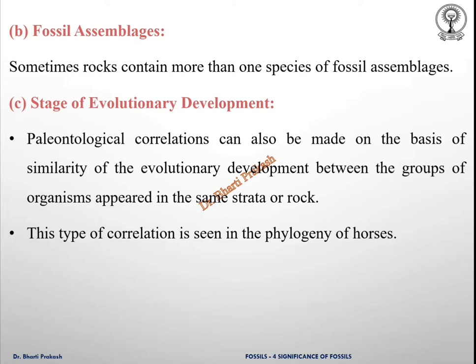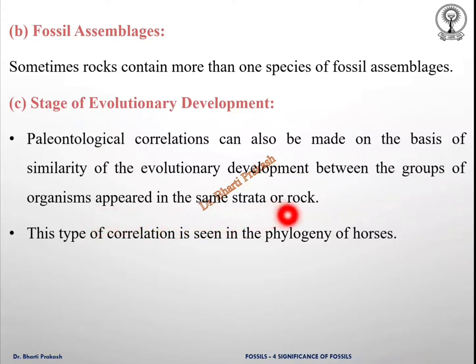The third paleontological correlation method is the stage of evolutionary development. Paleontological correlations can also be made on the basis of similarity of evolutionary development between groups of organisms that appeared in the same strata or rock. This type of correlation is seen in the phylogeny of horses. The record begins with Hyracotherium, the dawn horse, which was about the size of a small dog. It is the most primitive known horse, which appeared in the Eocene. The later horses which appeared in the successive periods were larger in size.